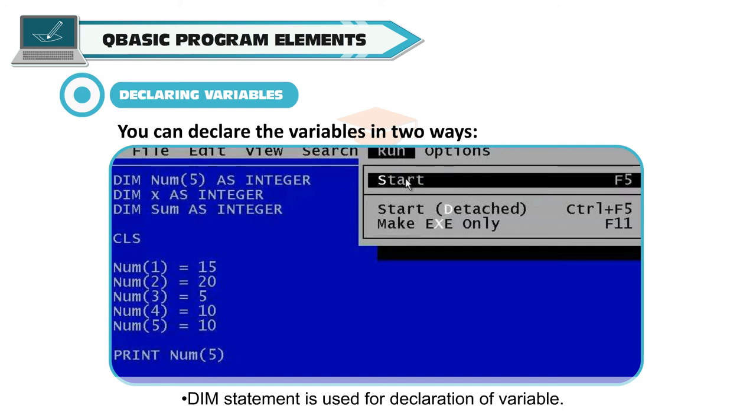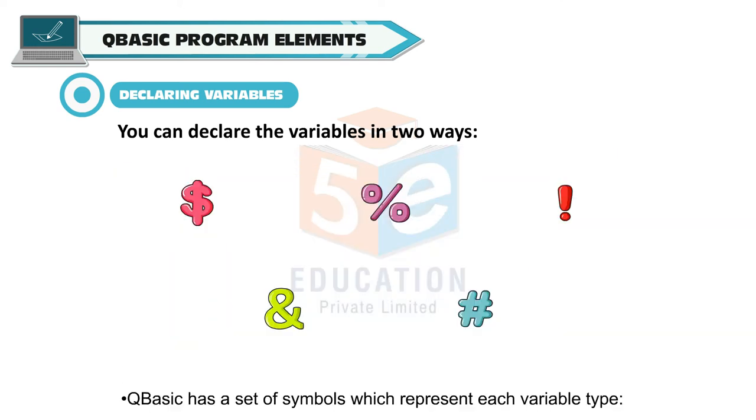Declaring variables: You can declare the variables in two ways. DIM statement is used for declaration of variables. Suppose you wanted to make a variable called sum, which would contain an integer. You can do it as follows: Dim sum as integer. QBasic has a set of symbols which represent each variable type.